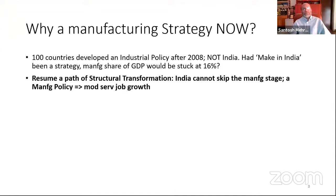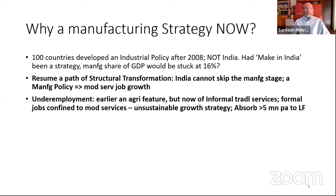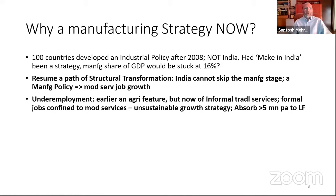India cannot skip the manufacturing stage, unlike some countries. A manufacturing policy would actually enable more modern services job growth. What has happened in the Indian economy is that underemployment has been a longstanding problem — earlier it was an agricultural feature, but now it characterizes informal traditional services. Formal jobs are confined to modern services, with hardly any in manufacturing. This is an unsustainable growth strategy. We are adding more than 5 million people to the labor force every year. This is why we've seen unemployment rise to unprecedented levels of over 6 percent in 2018.